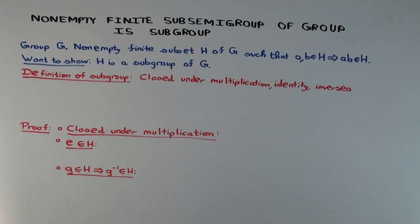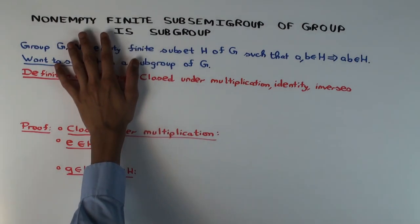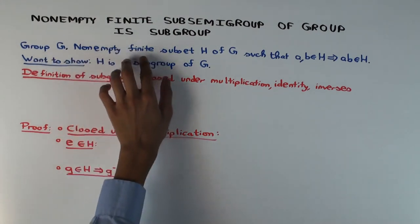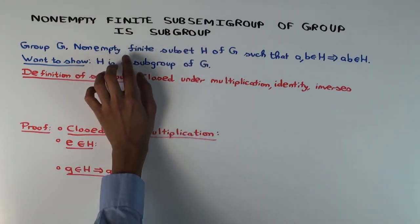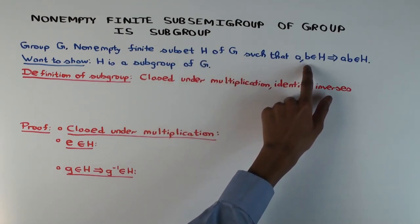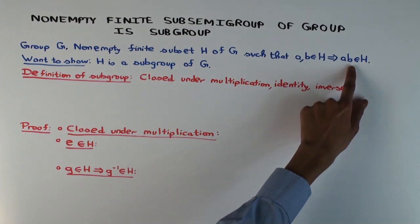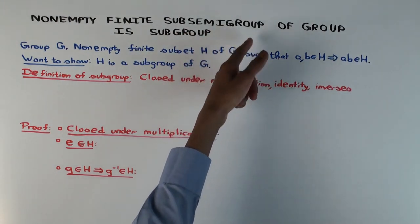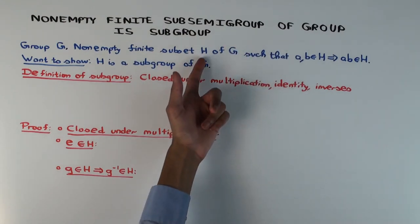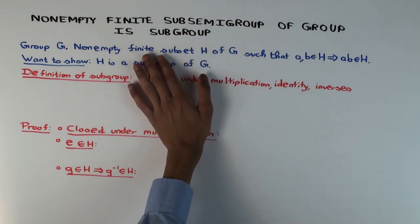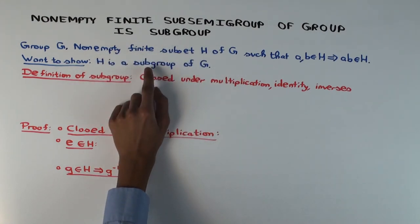This talk is about an interesting fact about finite subsets of groups, though you can also frame it in terms of finite groups. The statement is: you have a group, not necessarily finite, and a non-empty finite subset of the group. Non-empty means it has at least one element, and finite means finitely many elements. The subset has the property that whenever you take two elements in it, their product is also in it — so it's closed under multiplication, making it a sub-semigroup. What I want to show is that if it's non-empty and finite, then it actually is a subgroup.